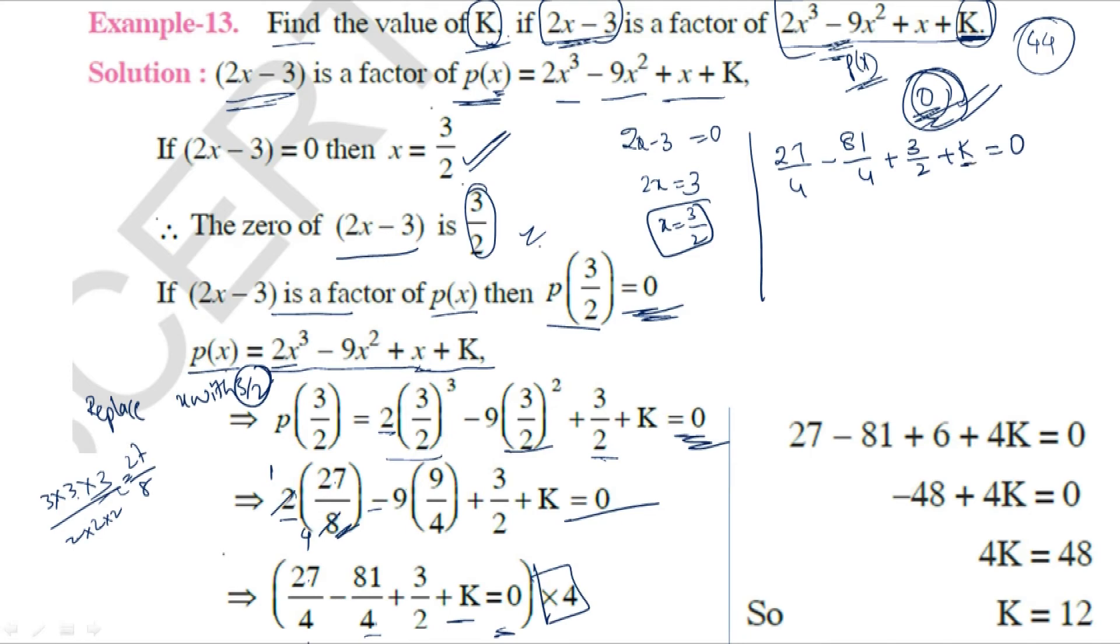We need to isolate K. Moving the other terms to the right side: K = -27/4 + 81/4 - 3/2.